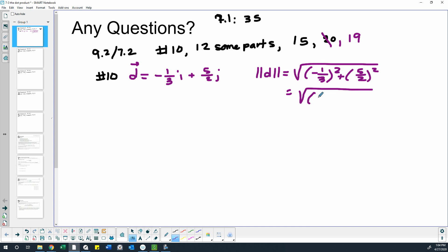And then, one-ninth plus twenty-five fourths. So we want a common denominator, which I think is 36.